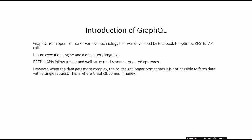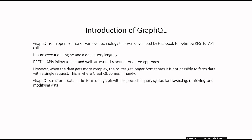However, when the data gets more complex, the routes get longer. In RESTful APIs, sometimes it is not possible to fetch the data with a single request. This is where GraphQL comes in handy. GraphQL is structured in the form of a graph with its powerful query syntax for traversing, retrieving, and modifying data.